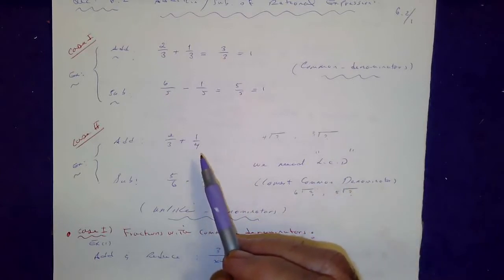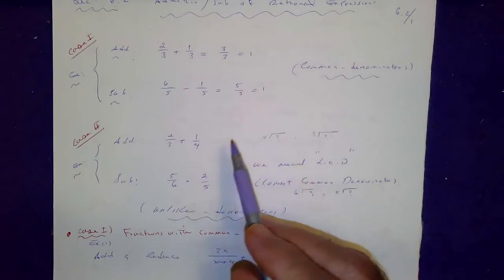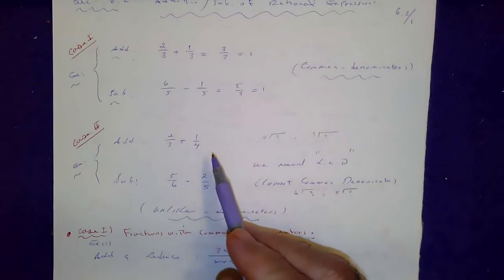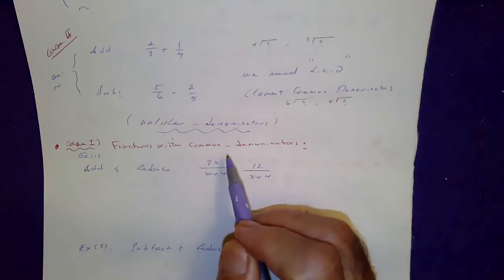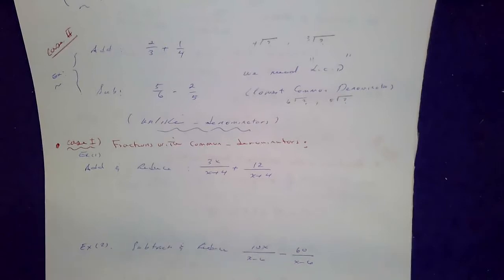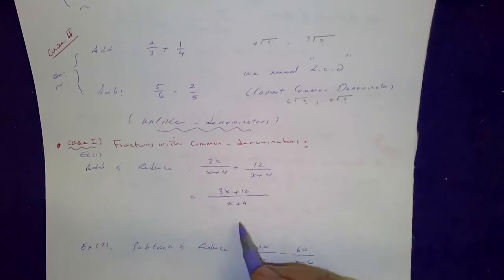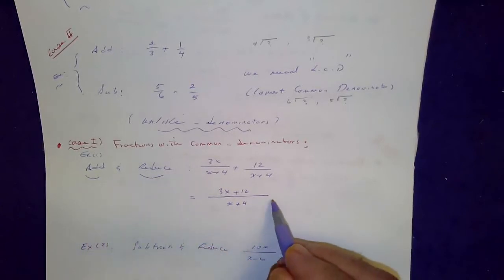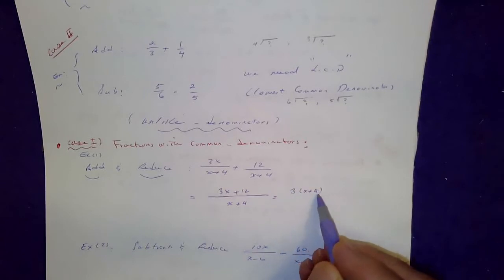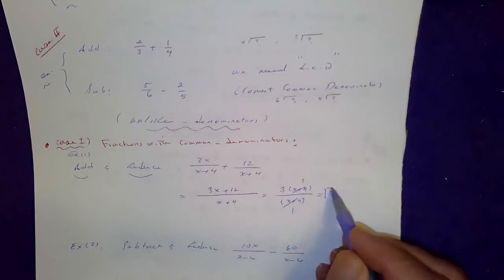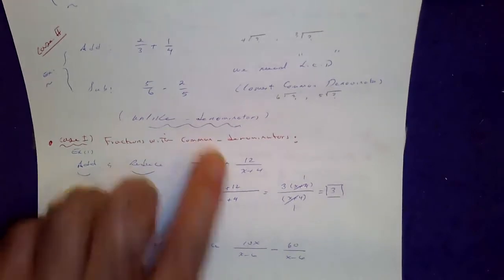When we say what's the lowest common denominator, we're asking: give me the smallest number that 4 and 3 divide into, or give me the smallest number which 6 and 5 divide into. Here LCD is 12, here it's 30. For common denominators, it's easy: put one of the denominators down and add or subtract the tops. After the addition, reduce the final answer. Factor out the top — that would be x plus 4 — and the common factor x plus 4 divides once, so the final answer is 3.